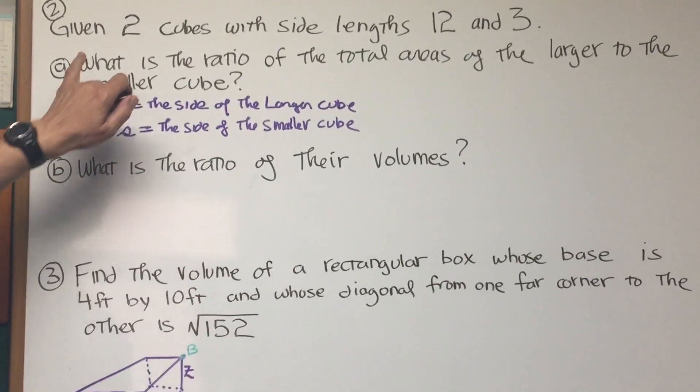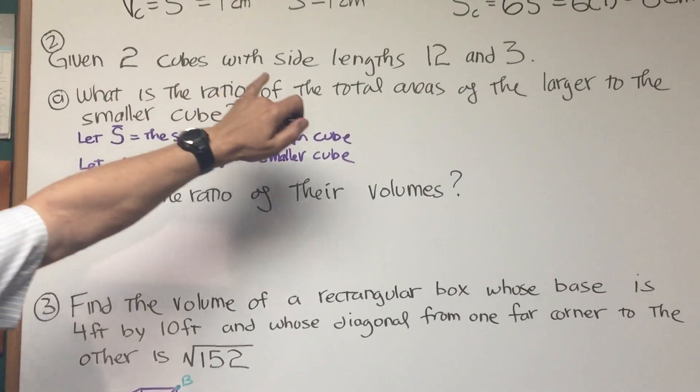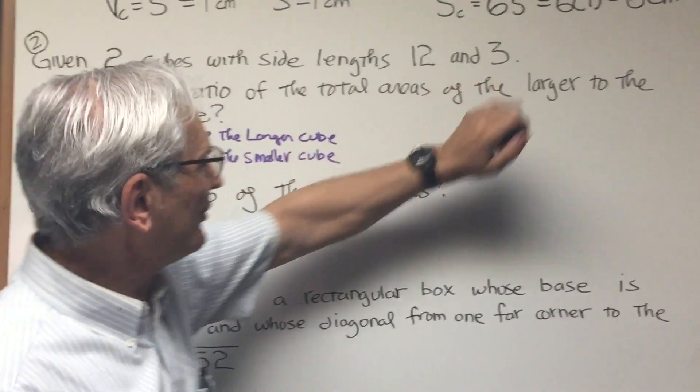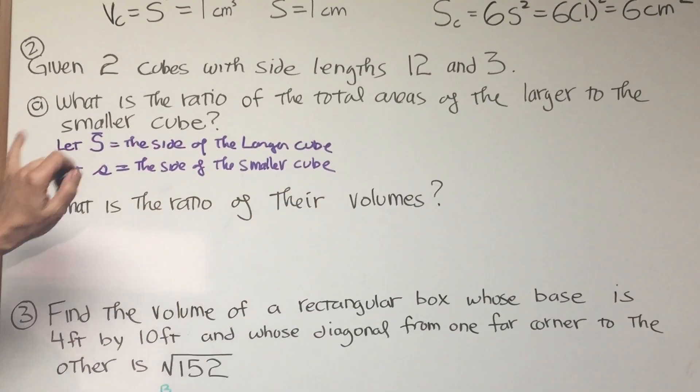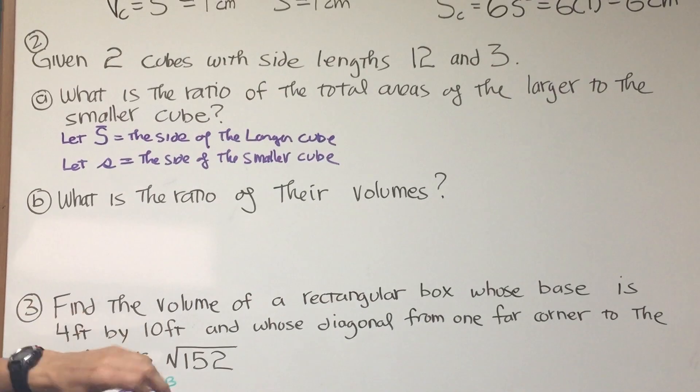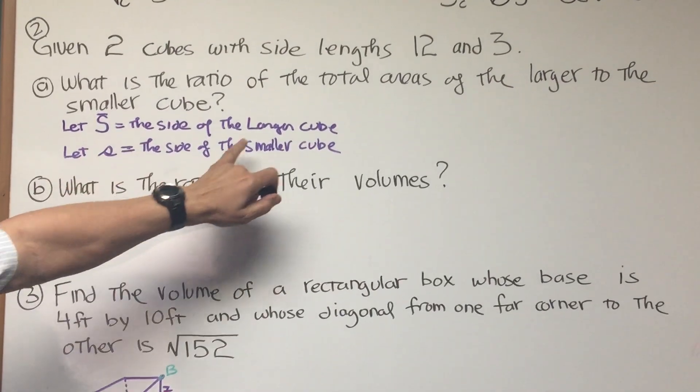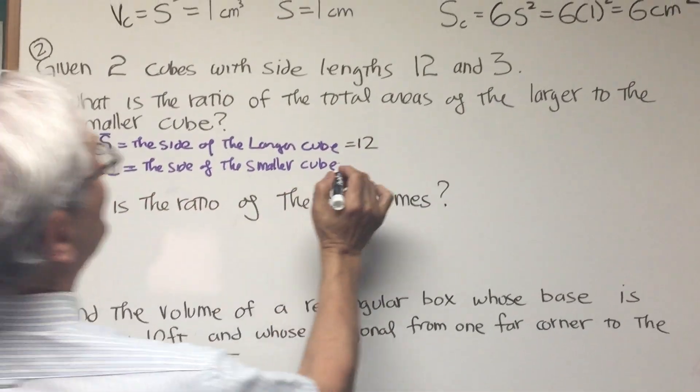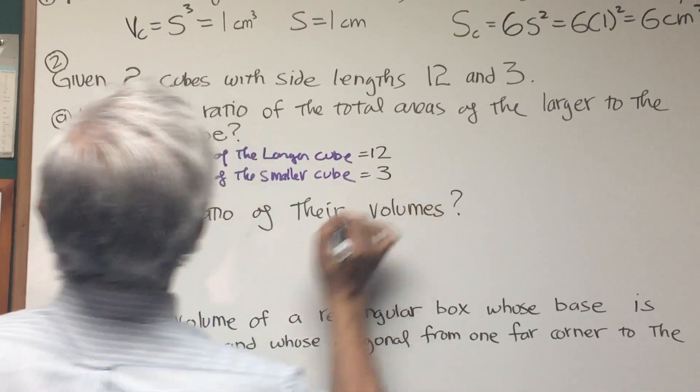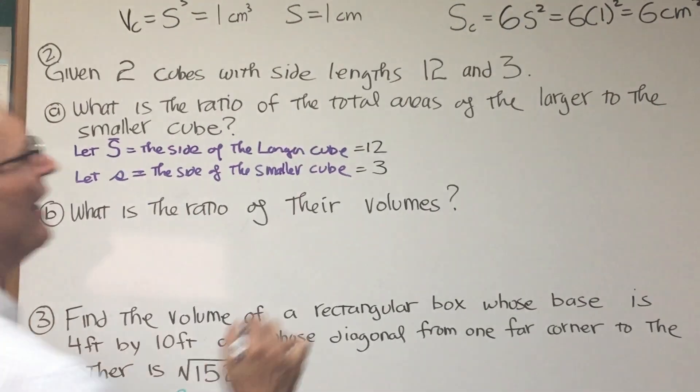Now let's go to the next one. Given two cubes with side lengths 12 and 3. Part A, what's the ratio of the total areas of the larger to the smaller cube? Well, okay, let s equal the side of the larger cube. That's going to be equal to 12. And let s equal the side of the smaller cube. That's going to be equal to 3. What's the ratio of the total areas?